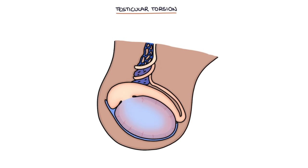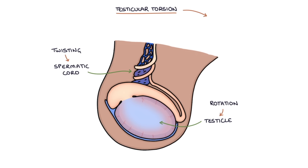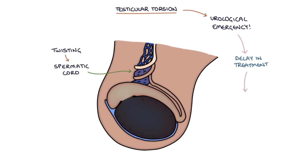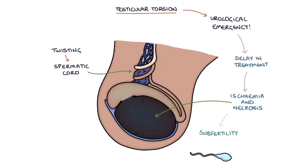Testicular torsion refers to twisting of the spermatic cord with rotation of the testicle. It's a urological emergency and a delay in treatment increases the risk of ischemia and necrosis of the testicle, which can lead to subfertility or infertility. There's an urgent need to take action, otherwise it could lead to death of the testicle and infertility.